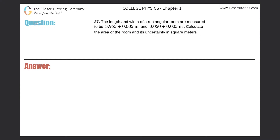Number 27. The length and width of a rectangular room are measured to be 3.955 plus or minus 0.005 meters and 3.050 plus or minus 0.005 meters. Calculate the area of the room and its uncertainty in square meters.